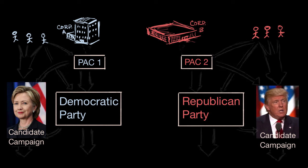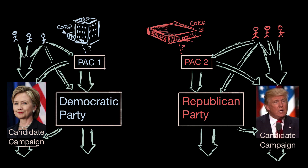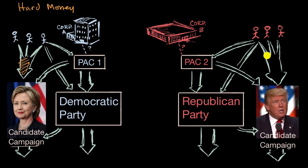But how can the money actually flow? It can flow in many different ways. There is hard money, which is money that is actually regulated by the Federal Election Committee, and there are caps in terms of how much people can donate to various parties. In general, any donation to a candidate's campaign is considered hard money — from individuals, or from a PAC that has pooled a bunch of money.